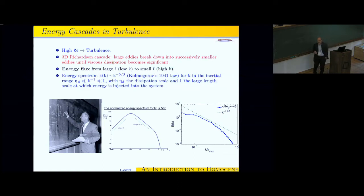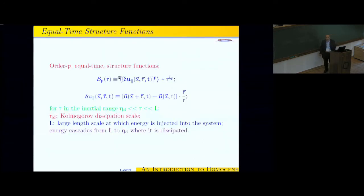There are theoretical reasons for believing that there will be corrections to that. And these come from experiments first, which led to a certain theory. So those experiments often begin by measuring what are called order p equal time structure functions. For this talk, we will only do equal time. What is this structure function? You begin by taking the velocity field at the point x plus r, subtract from it the velocity field at the point x. You call that a velocity increment.